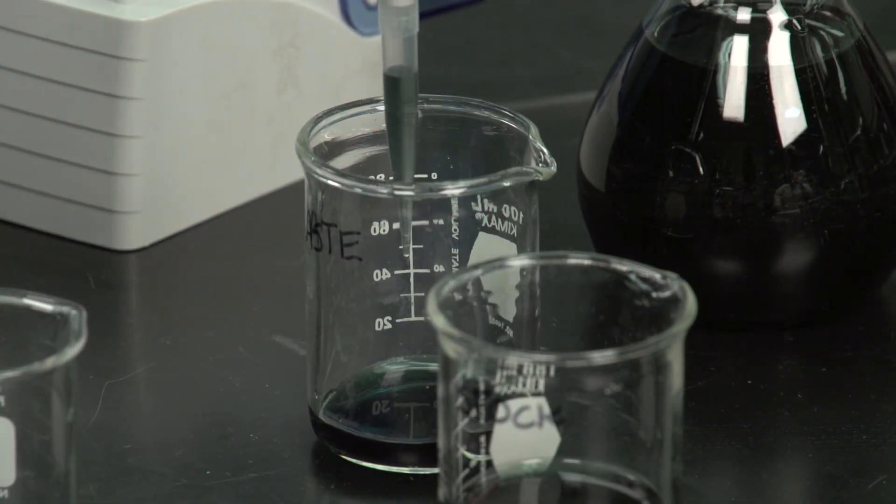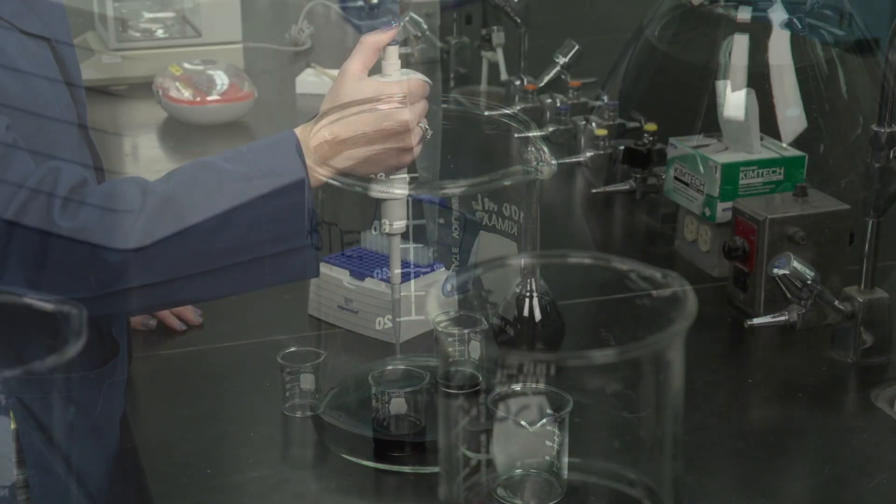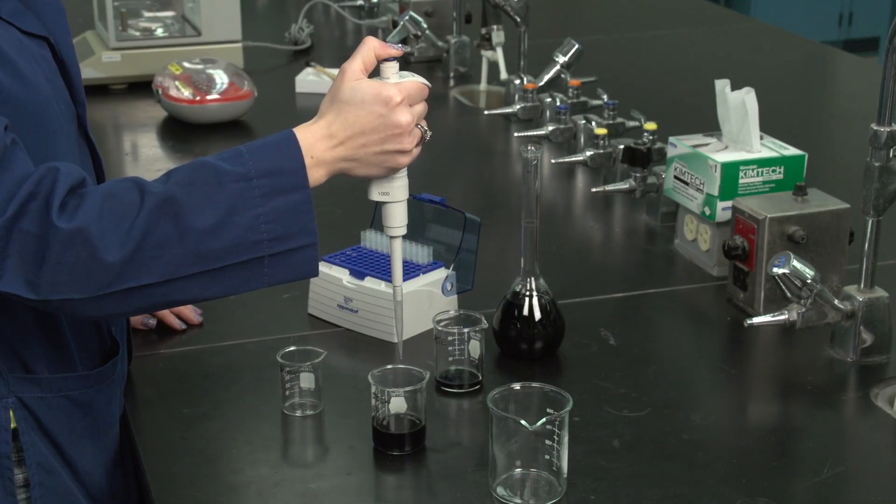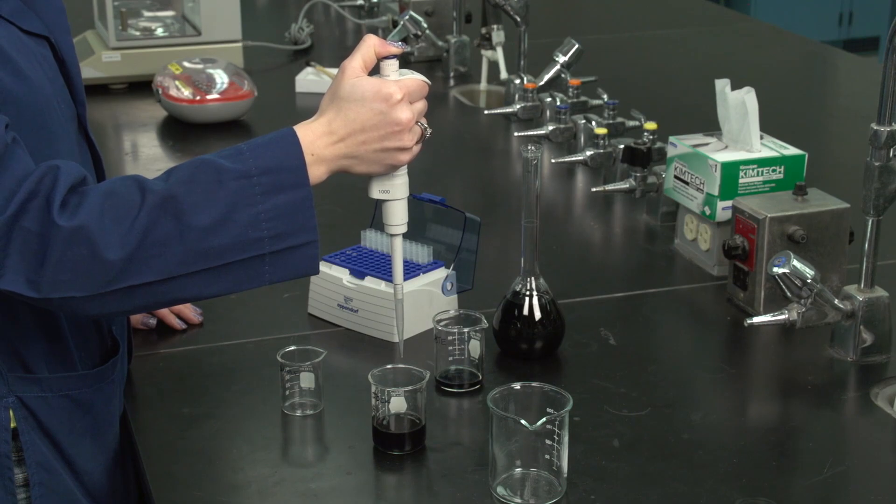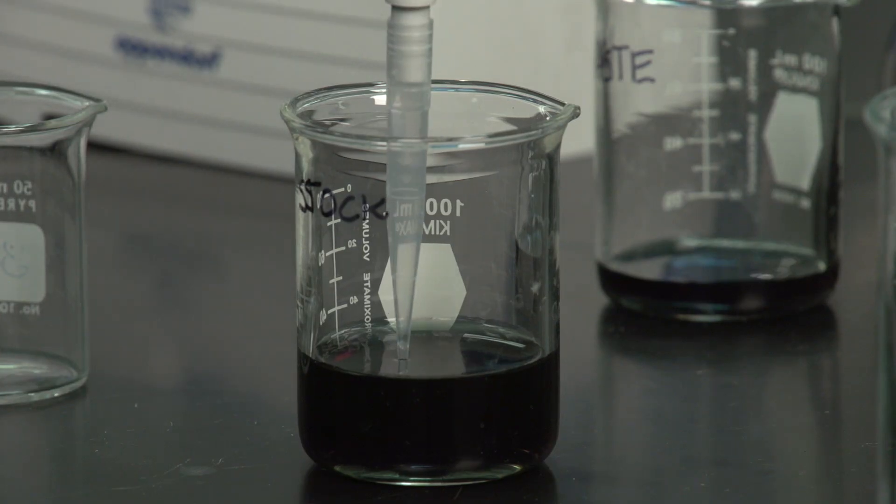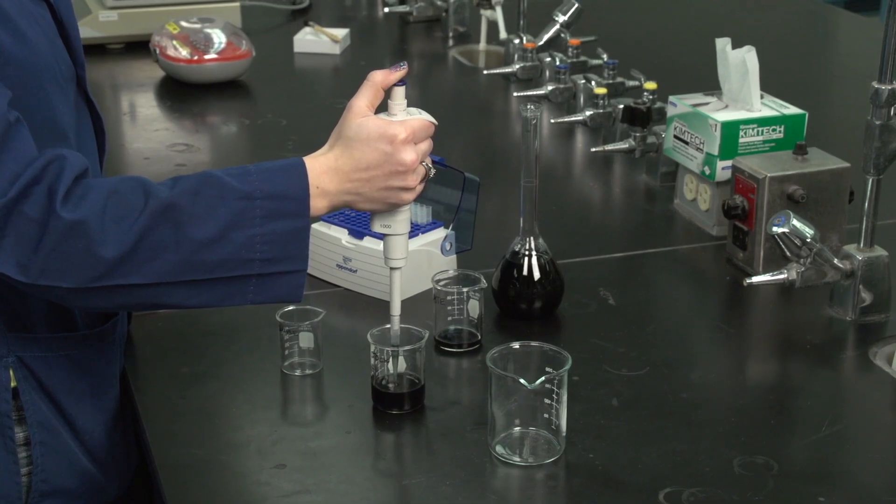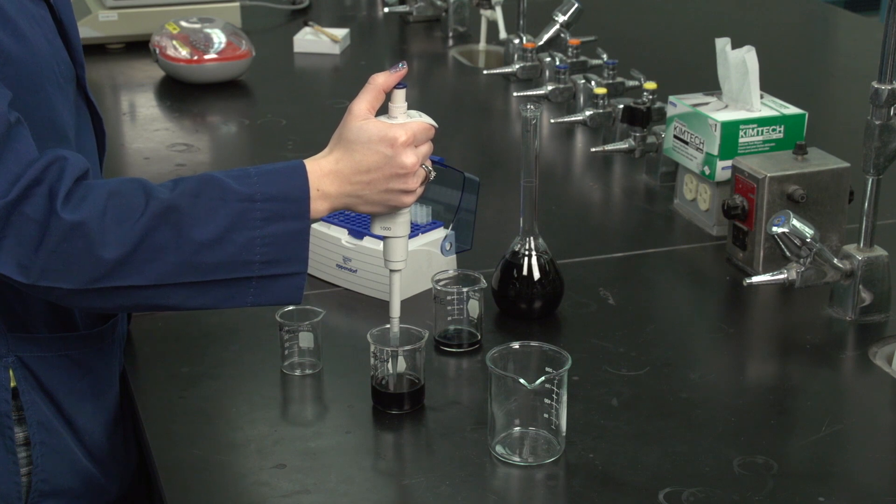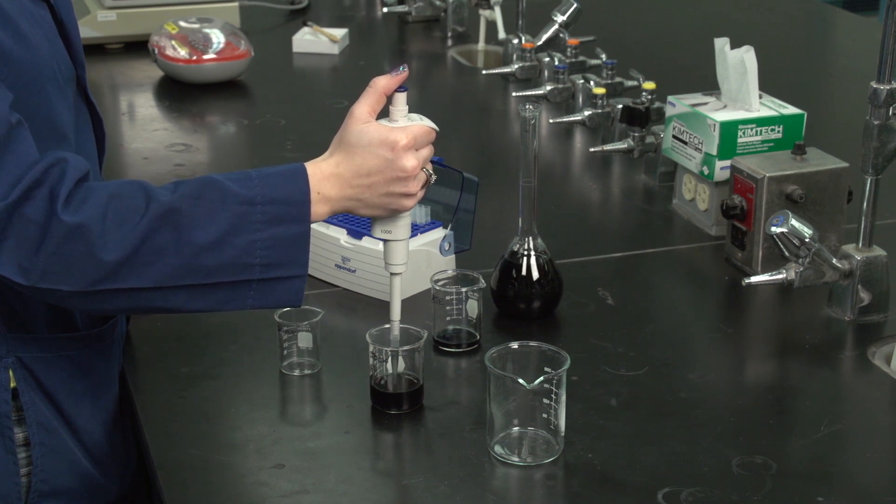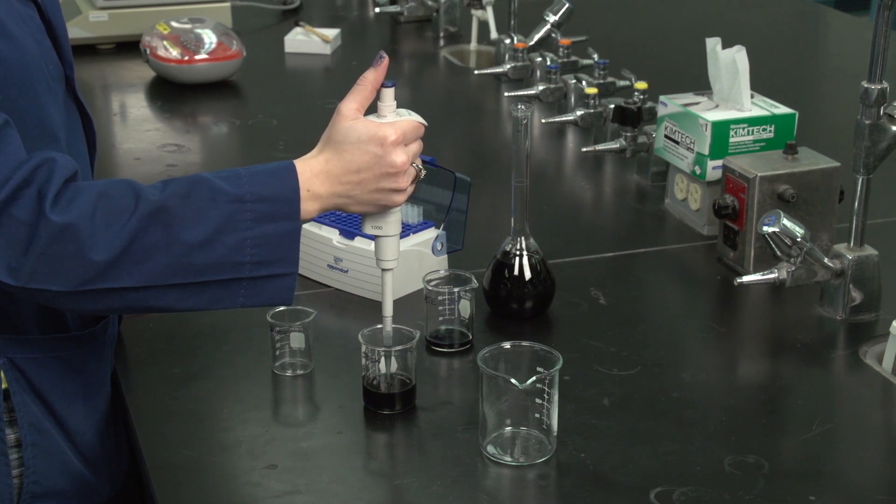You are now ready to transfer liquid using the micropipette. Depress the plunger to the first stop. While holding the pipette vertically, immerse the tip approximately three millimeters into the sample solution. Smoothly return the plunger to the initial position, allowing the sample to enter the tip. Do not allow the plunger to snap back to the initial position.